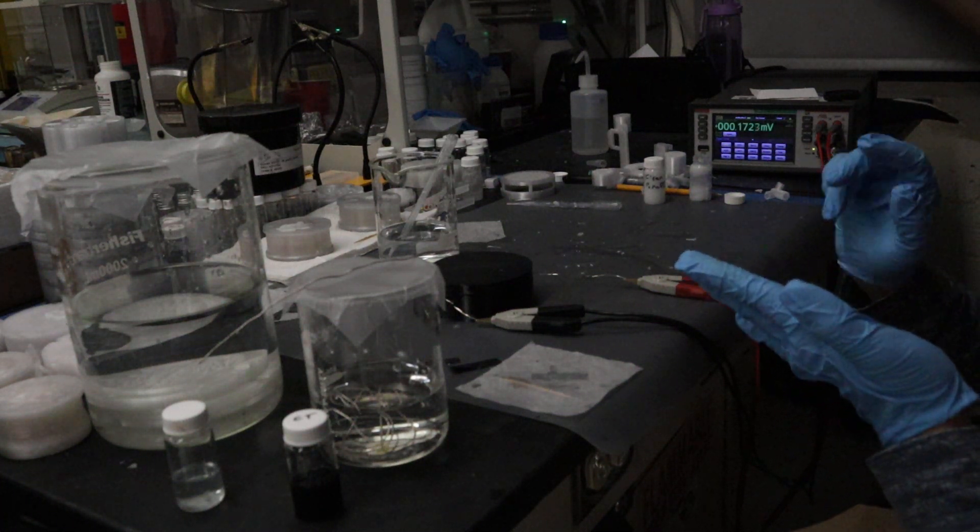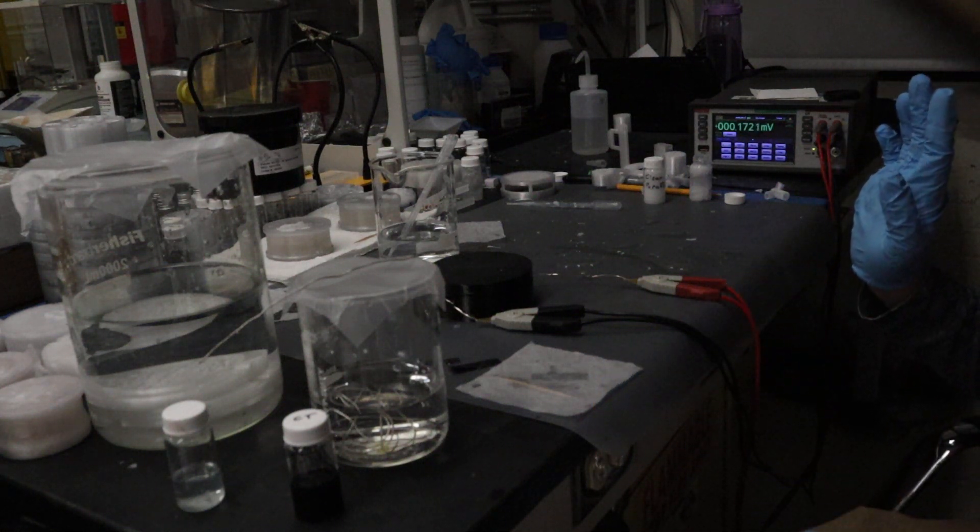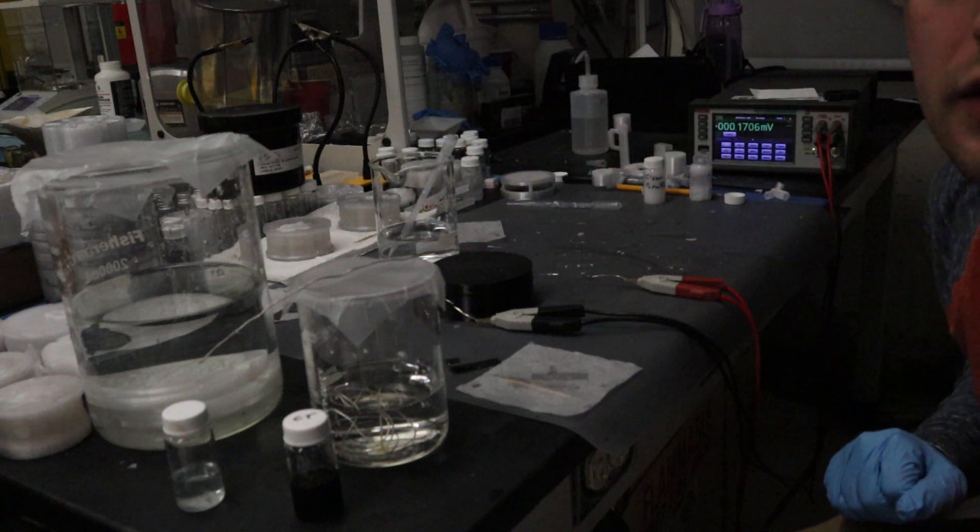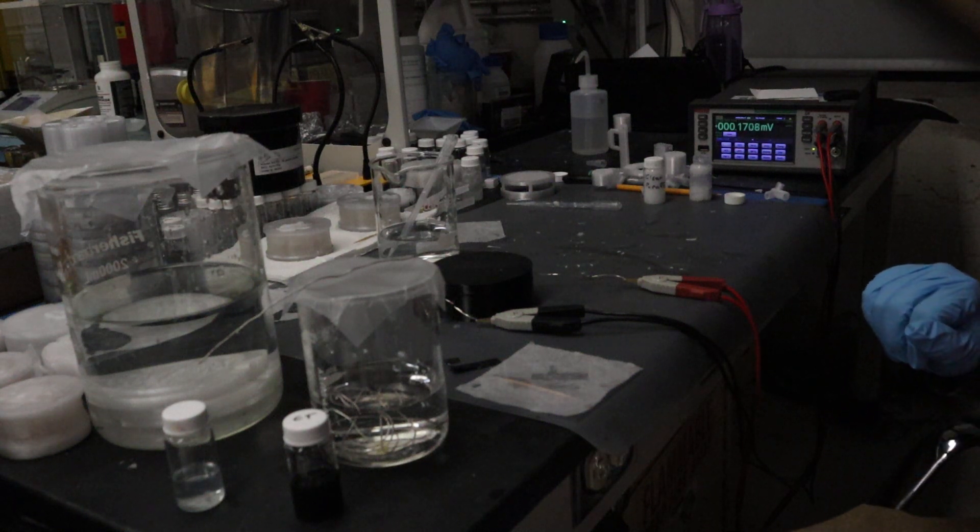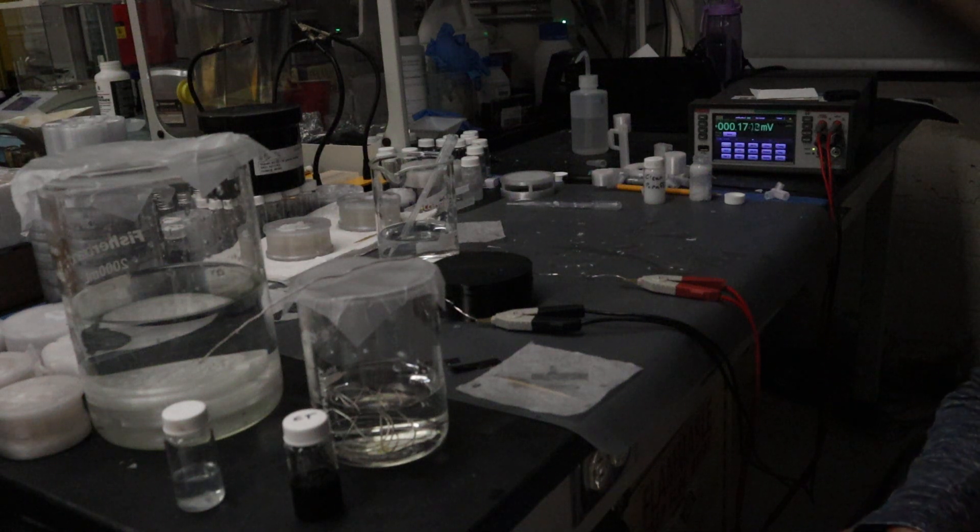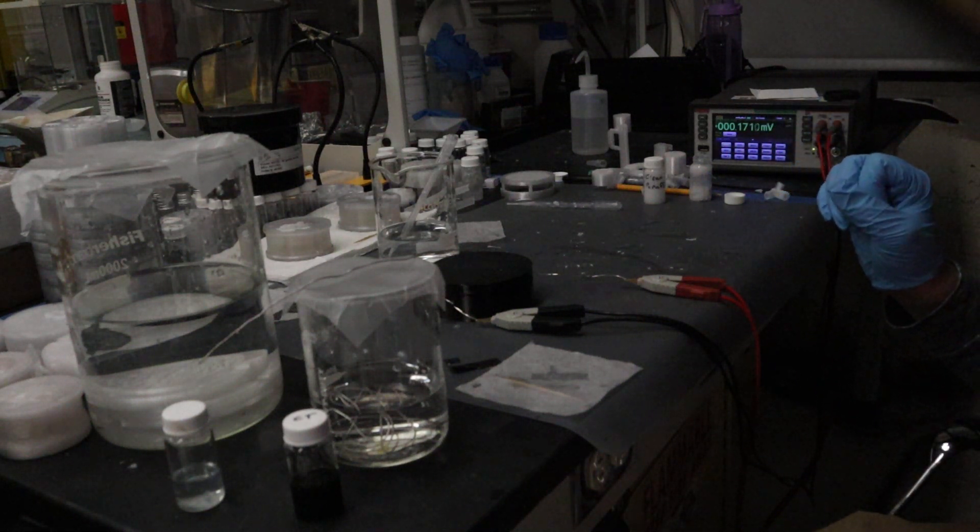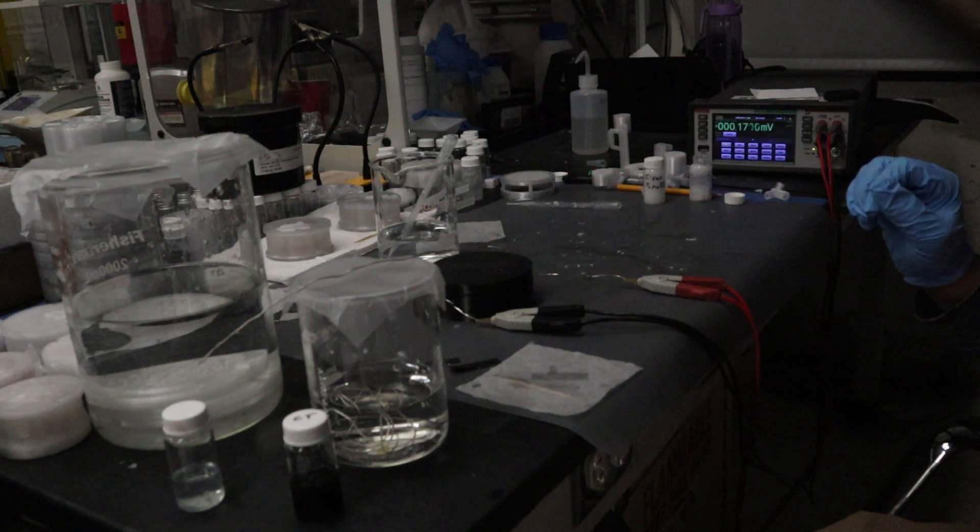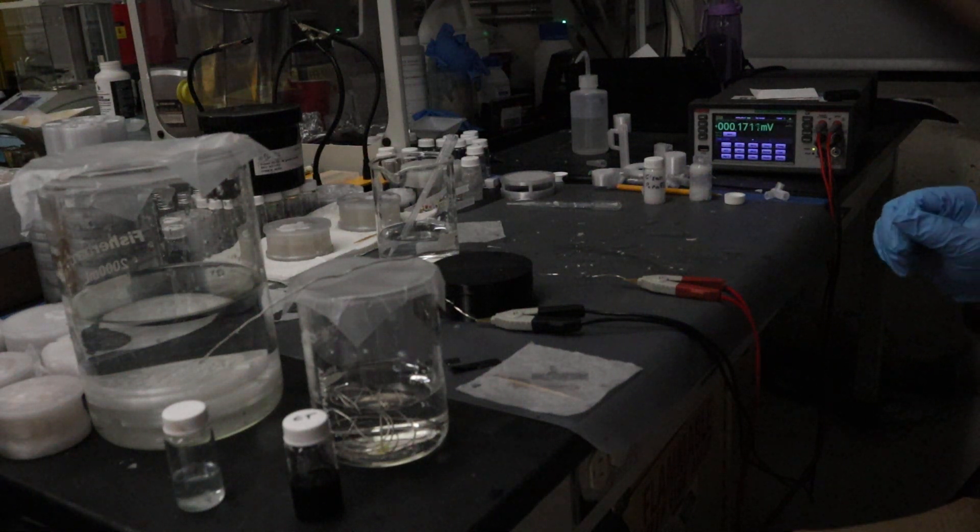Graphitic carbon nitride is an excellent catalyst. Unfortunately it's also a photocatalyst, so it's in this black box so that no appreciable light gets to it. That graphitic carbon nitride should be a good enough catalyst to get some electrical energy out of the pH difference.